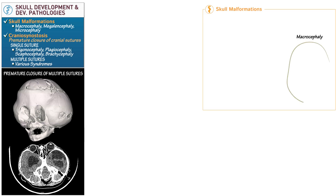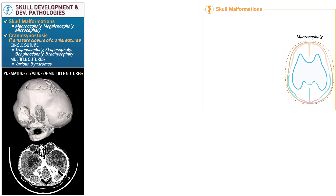Macrocephaly refers to cranial enlargement greater than the 98th percentile of the normal range. Although it can be due to enlargement of any of the three brain compartments, it's most commonly due to obstructive hydrocephalus. Enlargement of the gray and white matter of the brain — the parenchyma — is part of the next syndrome: megalencephaly.